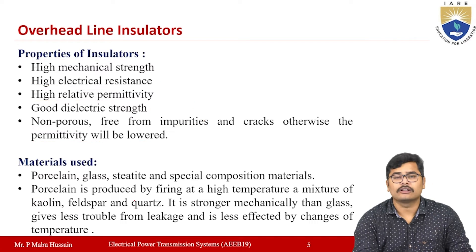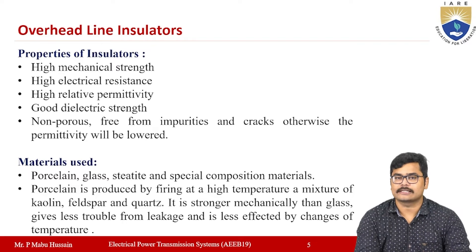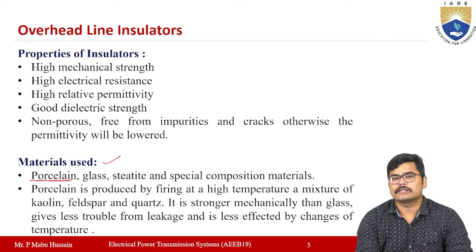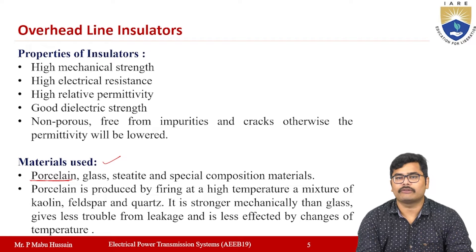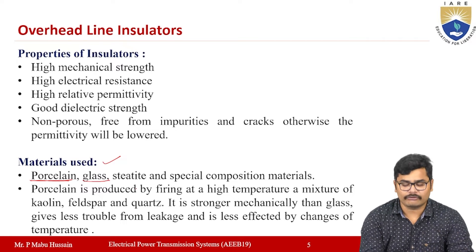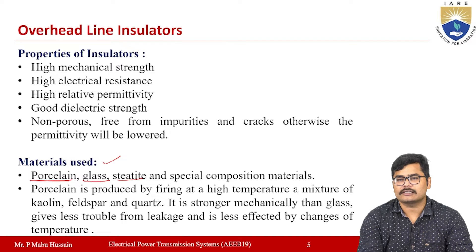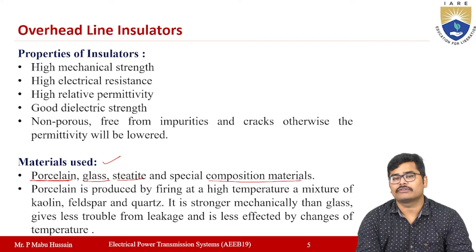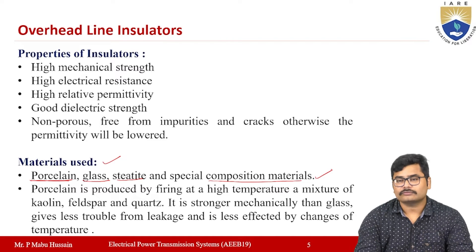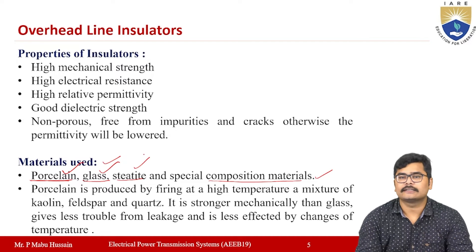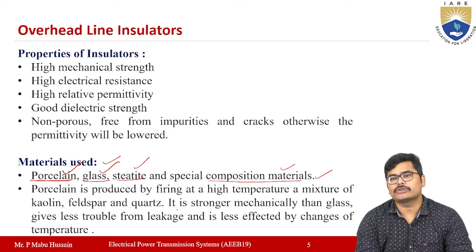The main material used for insulators from traditional times to the present is porcelain, which is widely used for manufacturing insulators. Other materials include glass and steatite. Sometimes two or more materials are mixed to make an insulator — in such cases it is called a combination or composition of materials.